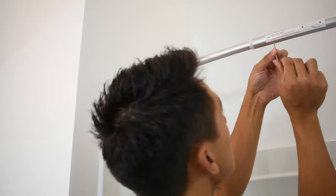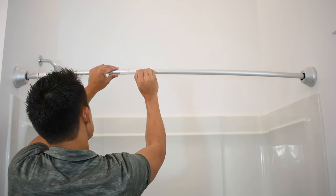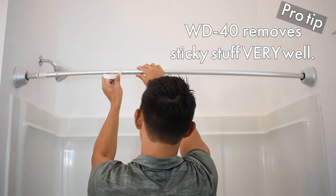Put that in, grab your allen wrench, tighten it down, double check that your shower rod's level, remove any stickers and if you have any sticker residue use Goo Gone or WD-40. And now you're done.